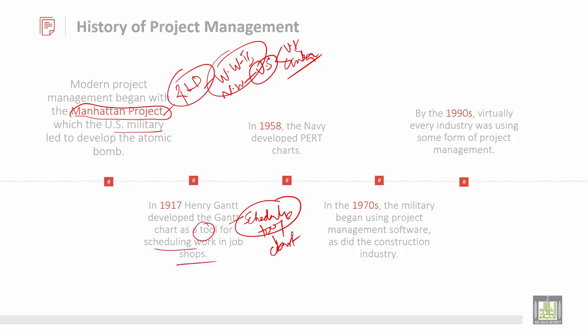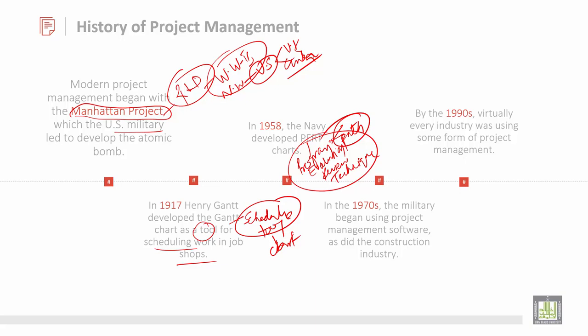Then in 1958, the Navy developed PERT — Program Evaluation and Review Technique. It is a scheduling technique used to find the path of a particular process or problem.